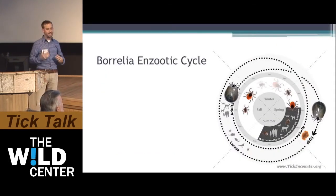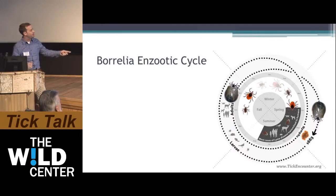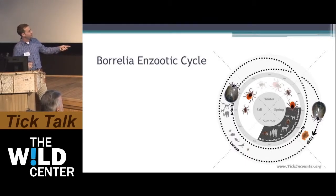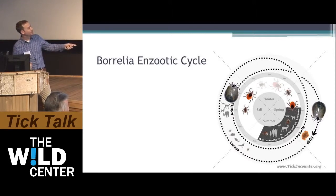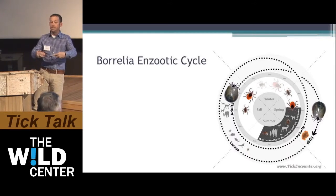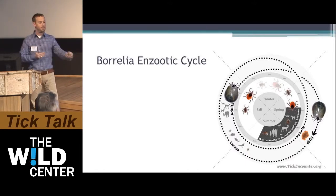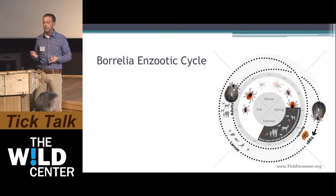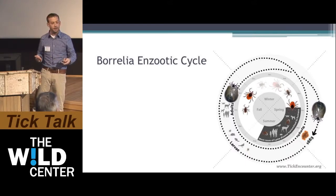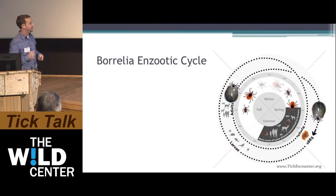Let's talk about the Borrelia enzootic cycle — how Borrelia gets around in nature between the tick and the animal. Starting from 3,000 eggs, the eggs hatch into larvae, which feed on small animals. The larvae molt into nymphs; if the animal was infected, the tick can transmit infection. Nymphs can also feed on humans and pick up an infection. Once the nymph molts into an adult, the adult can transmit disease to humans. Adults are more often infected than nymphs because they have two chances to acquire Borrelia. After the adult feeds and mates, the cycle starts over.